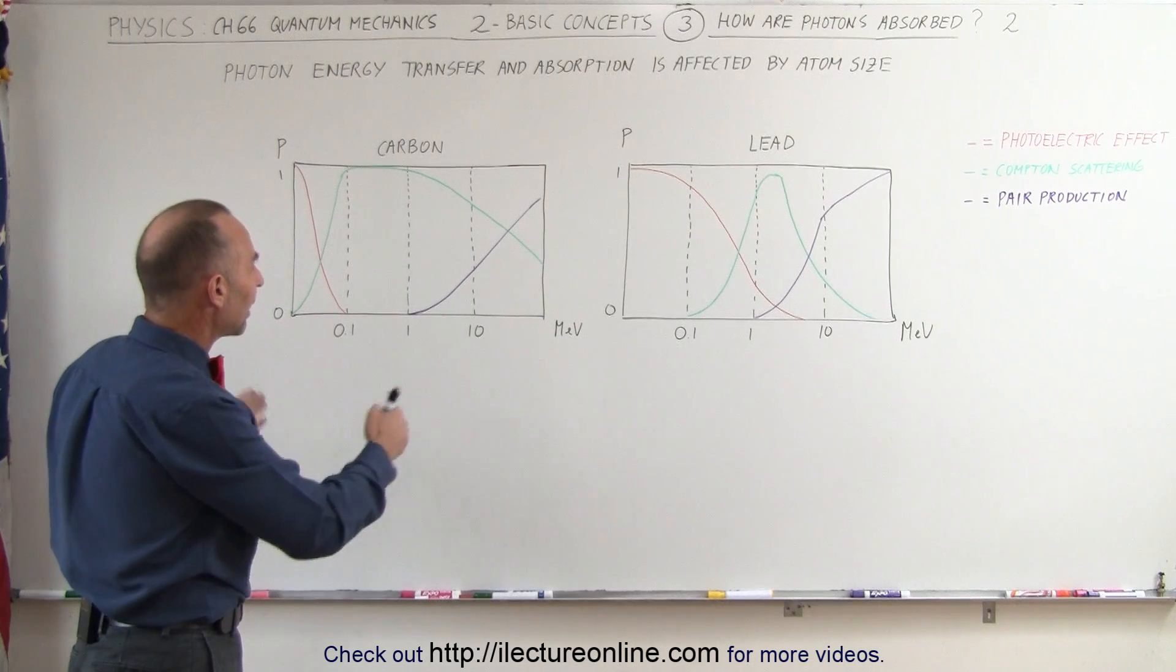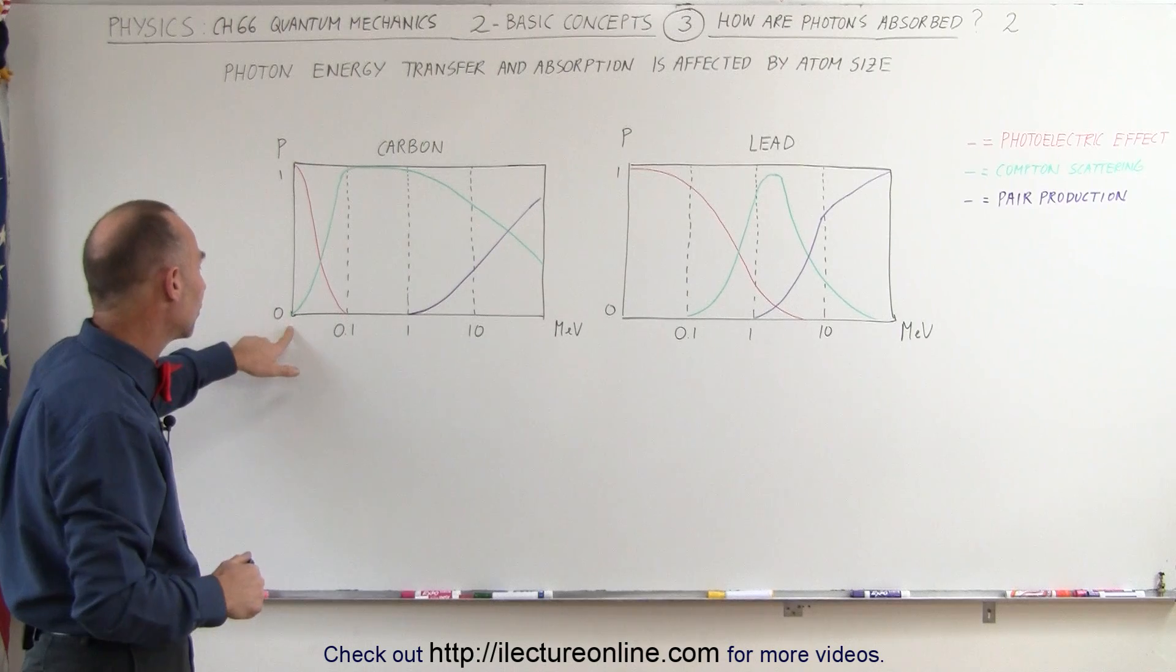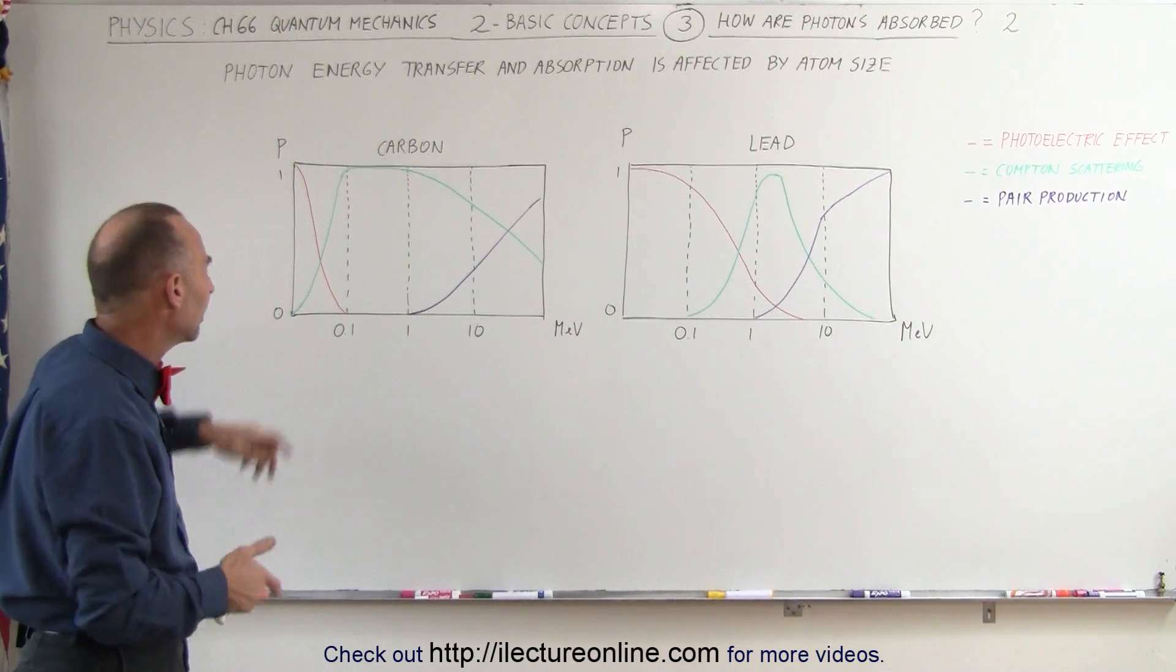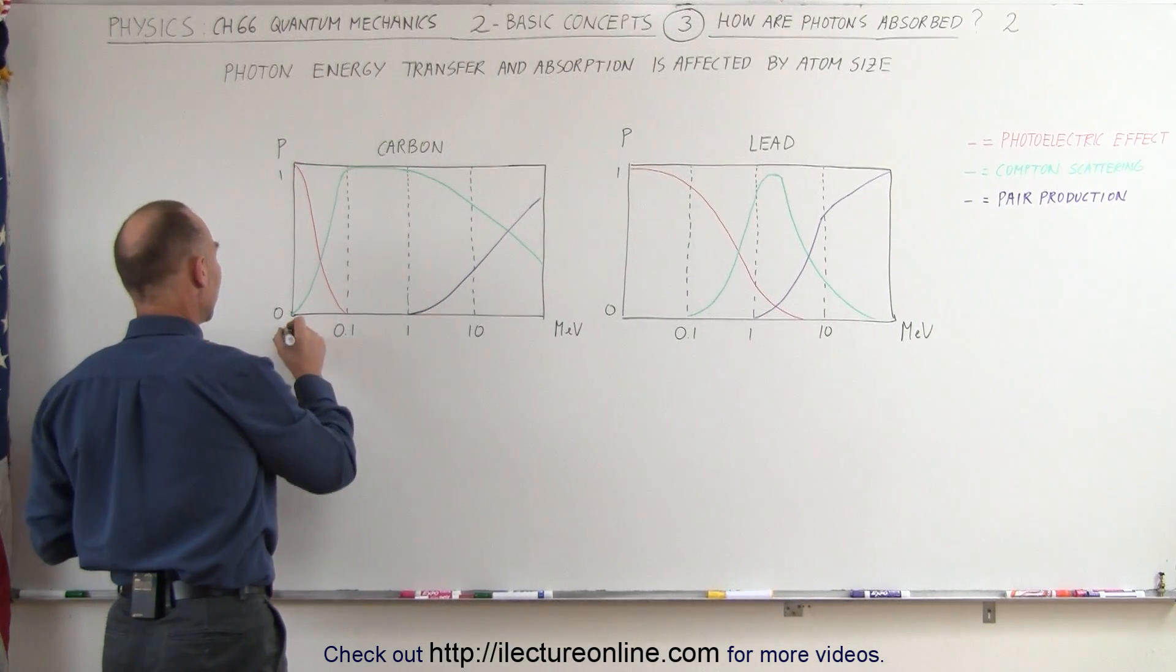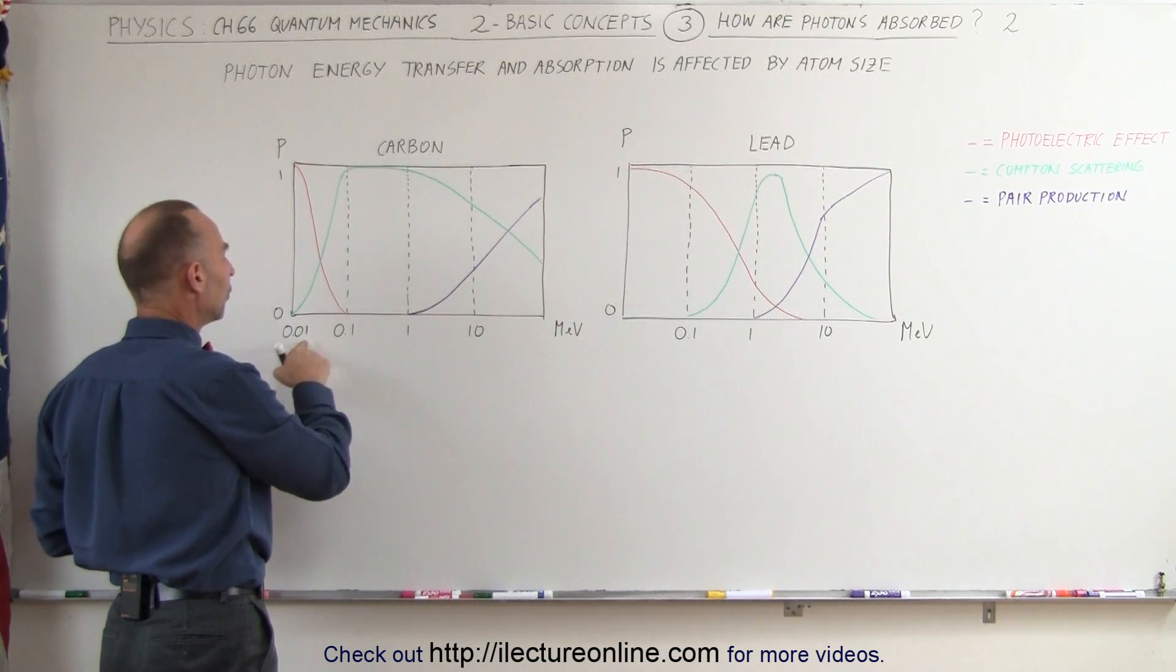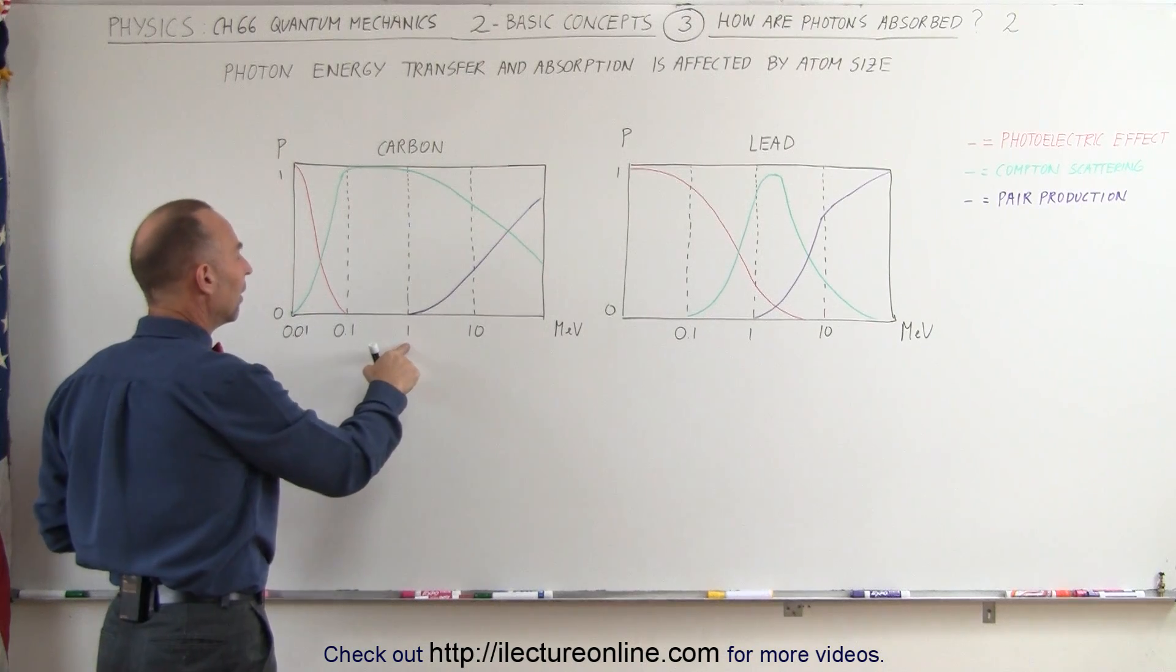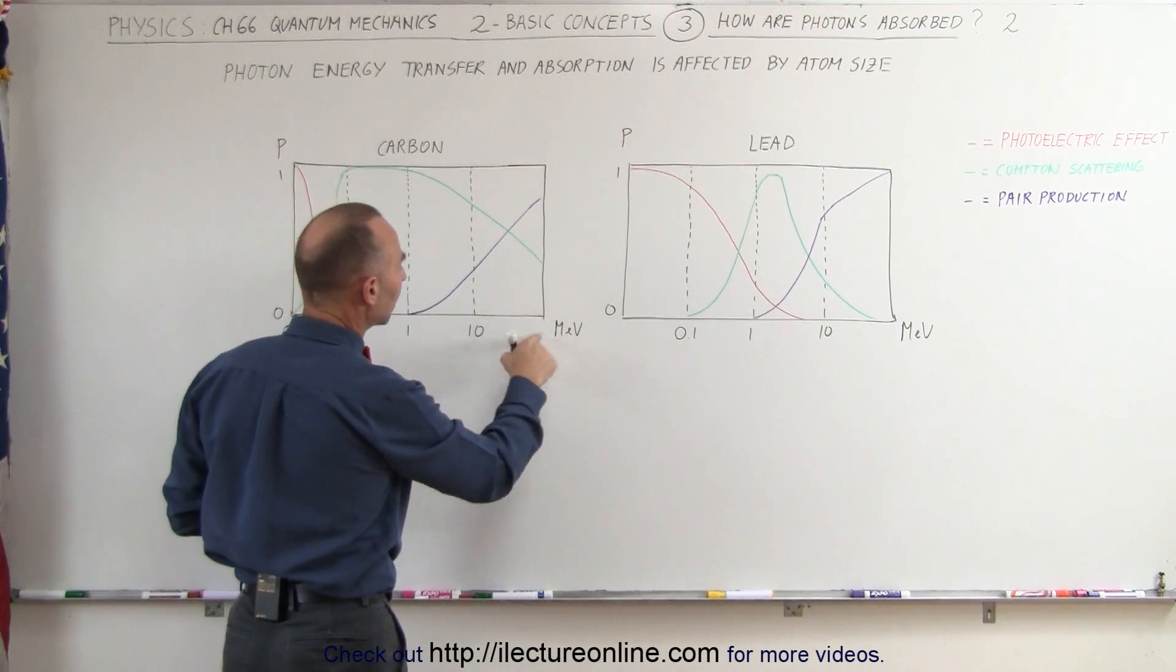The horizontal line represents the energy contained within the photon anywhere from 0.01 on this end, 0.01 MeVs, that would be 10 kilovolts, 10 kiloelectron volts, 100 kiloelectron volts, a million electron volts, 10 million and so forth.